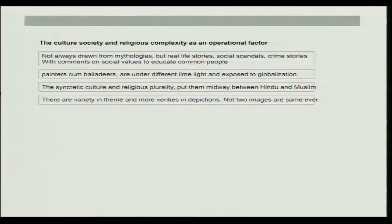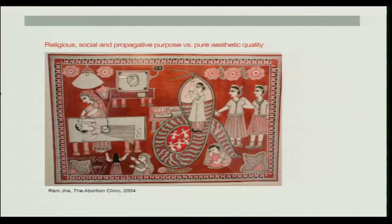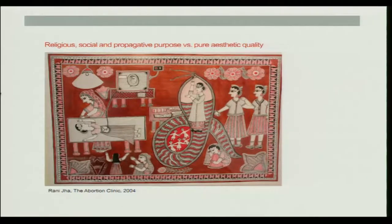There is variety in theme and more variety in their depictions — no two images are ever the same. The painting by Rani Jha, executed in 2004, is quite a recent artwork and the subject matter is much more radical. It shows an abortion clinic where the female foetus is being X-rayed through an ultrasound system and is ultimately killed.